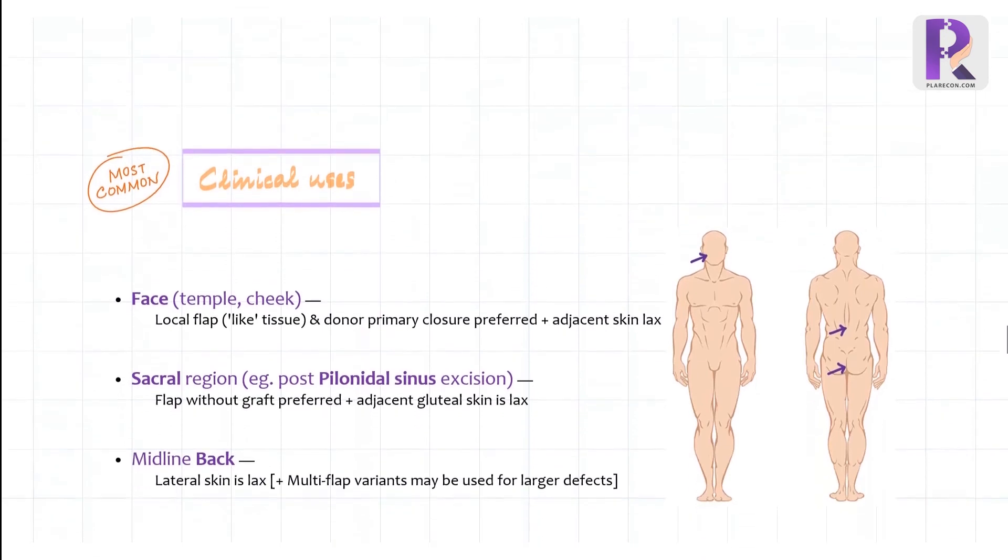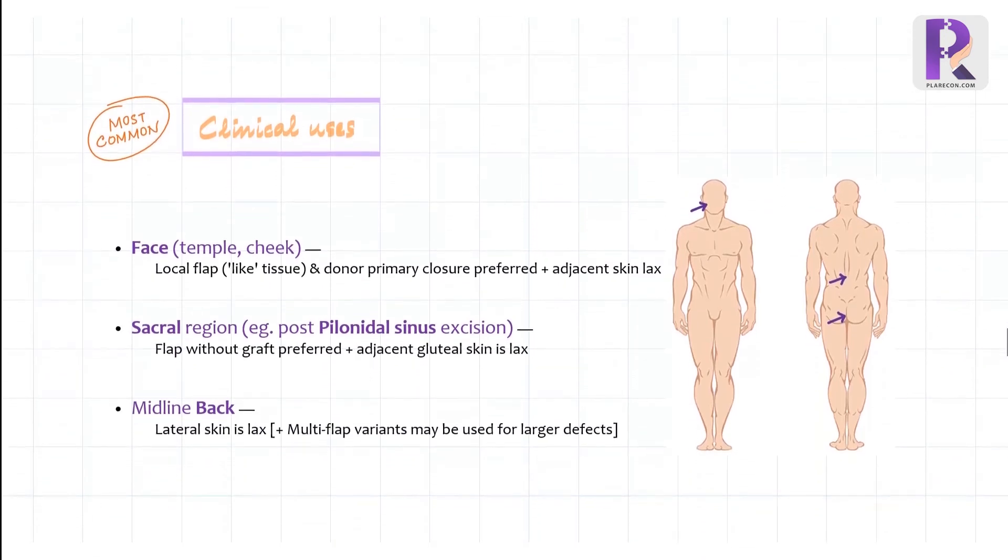Moving on to some of the clinical uses of Limburg's flap. By now, we are well aware it's very useful in facial defects. Local flaps are always preferred on face since no other tissue can really replace facial skin better, especially in the temporal region of the forehead and the cheek region with lax tissues. It's also typically used for small defects in the sacral region after pilonidal sinus excision and also in the midline back.